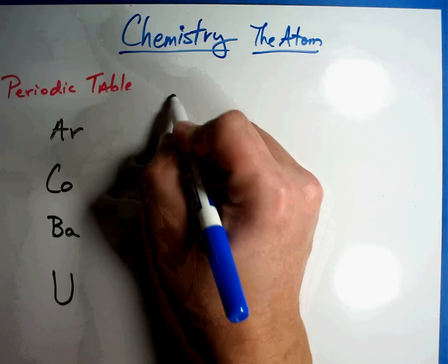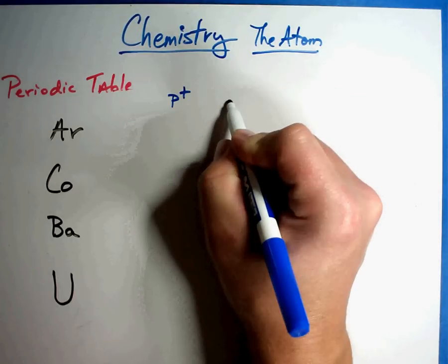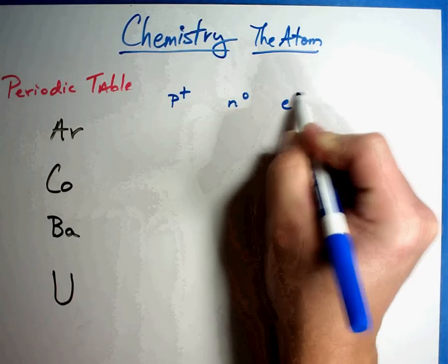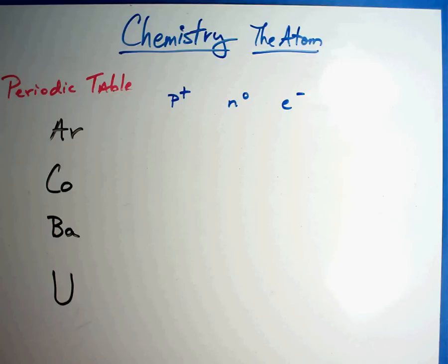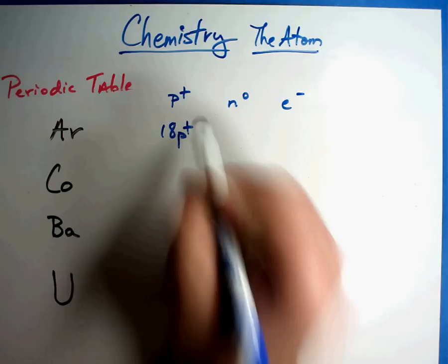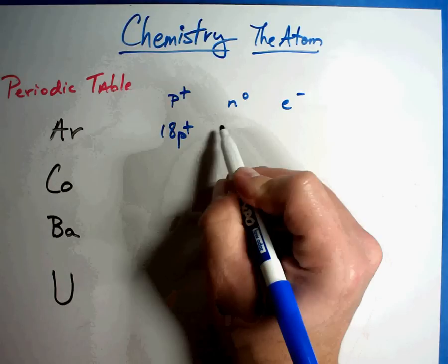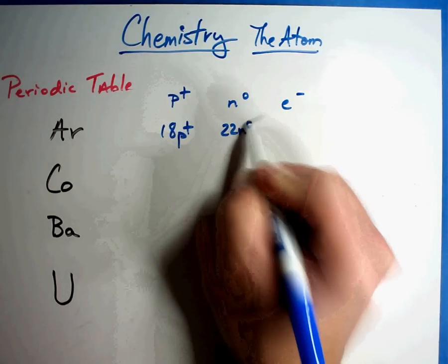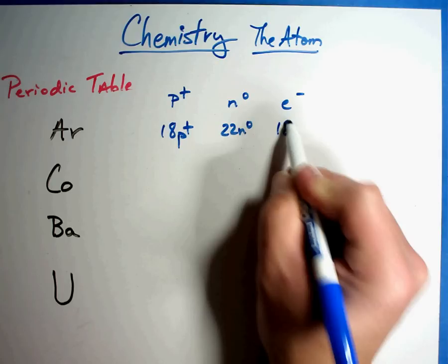All right, let's check your work. I'm just going to do it in categories like this. It'll make it a little easier. Argon, you should have gotten 18 protons, 22 neutrons, and 18 electrons.